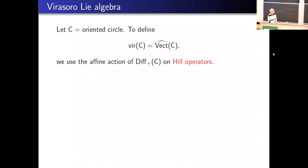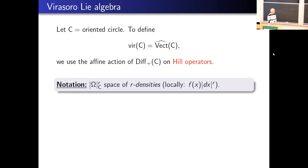The Virasoro algebra can be defined the same way — as a central extension of vector fields on a circle. The affine space one uses here is the space of Hill operators, so I have to explain what the space of Hill operators is.